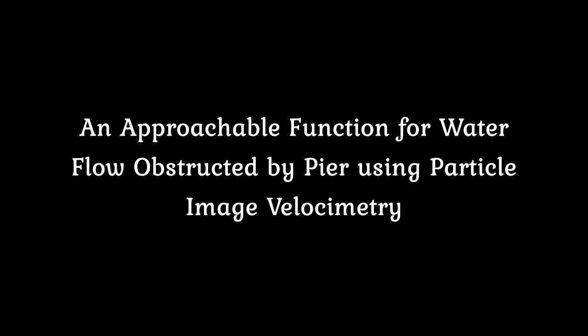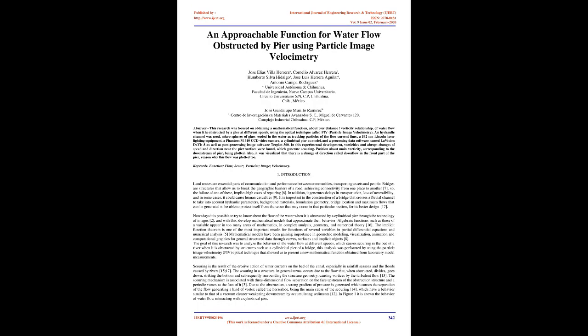An approachable function for water flow obstructed by pier using particle image velocimetry. Abstract: This research was focused on obtaining a mathematical function about pier distance/vorticity relationship of water flow when it is obstructed by a pier at different speeds, using the optical technique called PIV (Particle Image Velocimetry). A hydraulic channel was used with micro spheres of glass seated in the water as tracking particles of the flow current lines, a 532 nanometers Lincoln laser lighting equipment, a Phantom M310 CCD video camera, a cylindrical pier as model, and processing data software named LaVision Davis 8, as well as post-processing image software TechPlot 360.